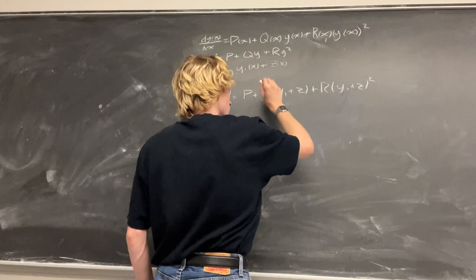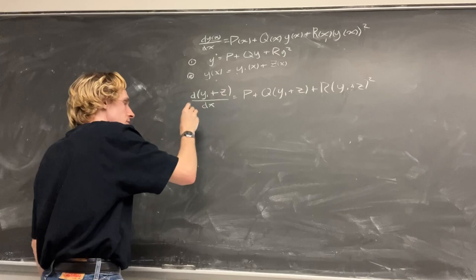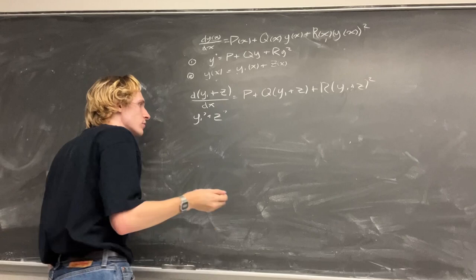is equal to p plus q(y_particular + z) plus r times (y_particular + z)². From here, all we have to do is factor this out and distribute our q and r, and use linearity to show that these two are just the derivatives that we have added.